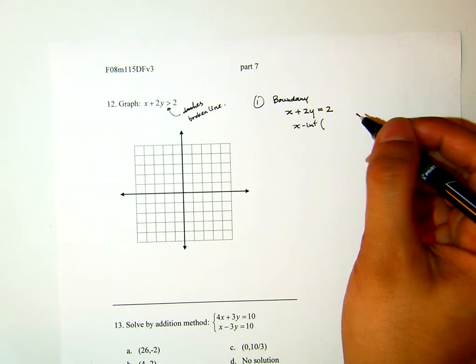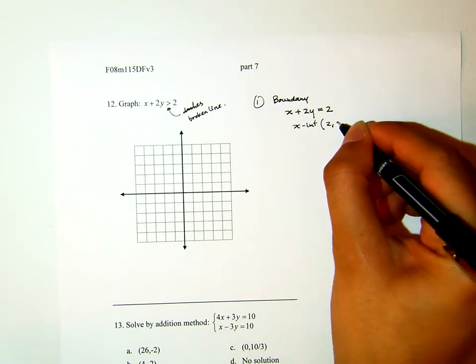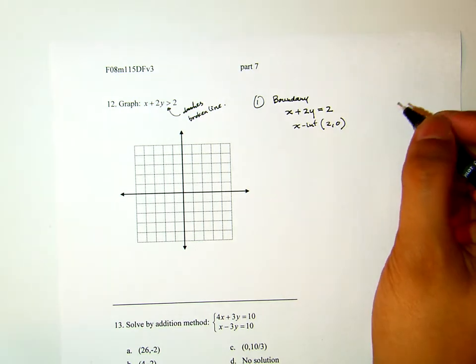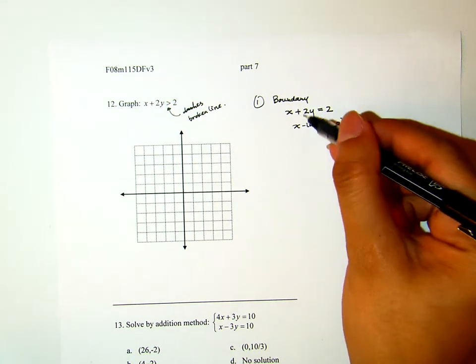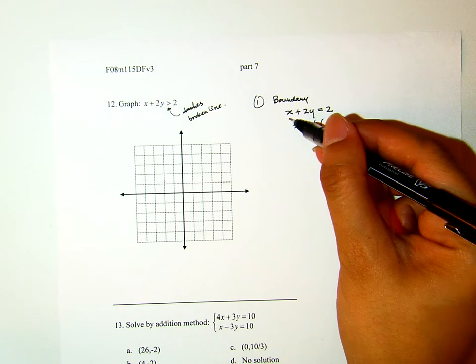By looking at that, x-intercept will be 2,0. I hope you know how I get it. For every x-intercept, y equals 0, right? When you set y equals 0, what happens to the x?